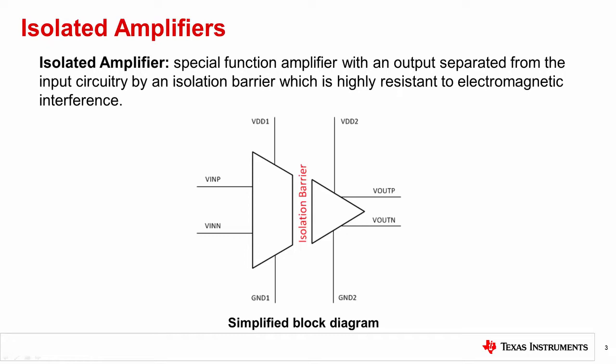Let's start by defining what an isolated amplifier is. An isolated amplifier is a special function amplifier with an output separated from the input circuitry by an isolation barrier which is highly resistant to electromagnetic interference. This interference, also known as EMI, is caused by external sources and when ignored can degrade the performance of the signal chain or cause errors in the data. While there are several different methods for achieving isolation, Texas Instruments employs a capacitive isolation barrier.